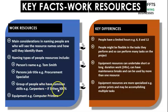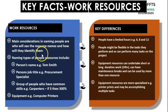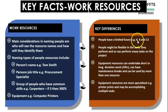You also have equipment, like a computer printer, as a work resource. The difference is that people have a limited number of hours of work — they can work six, eight, or twelve hours. If they work twelve hours, four hours will most likely be overtime.